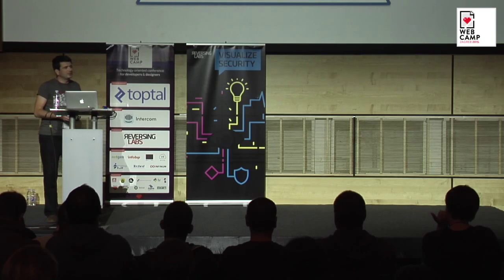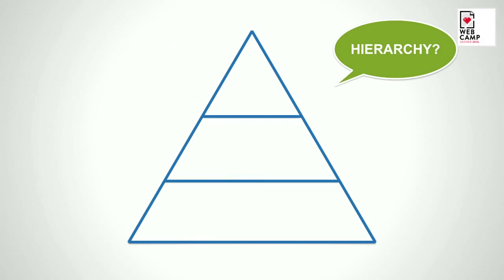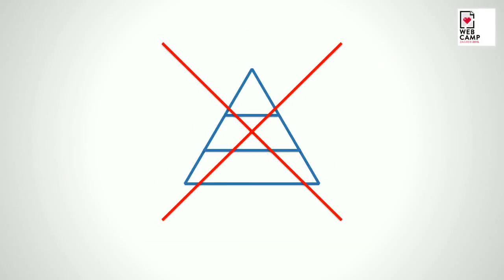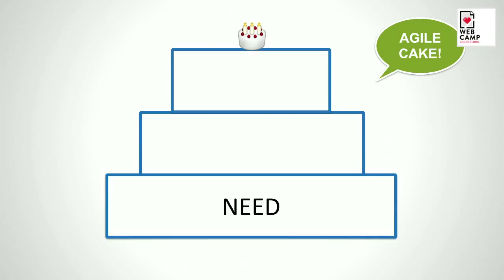But since this is an agile talk, the triangles and hierarchy — I think we should change that. Let's call it a cake, not a triangle or pyramid. So we have an agile cake. On the first floor, there is a need.